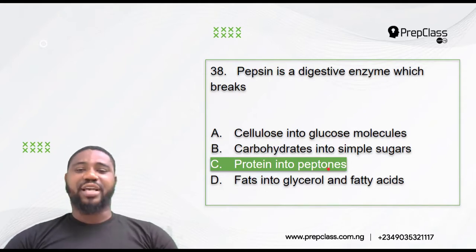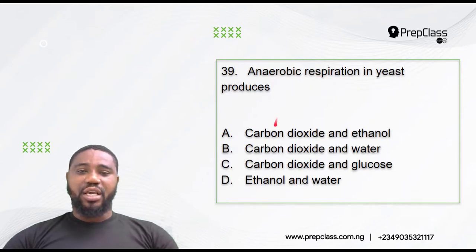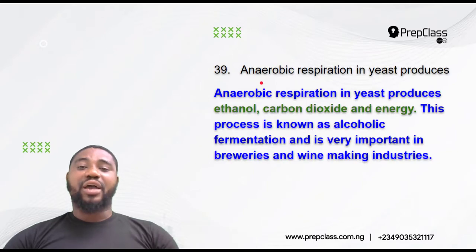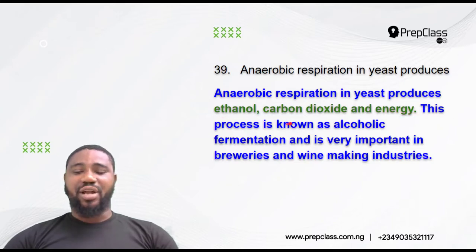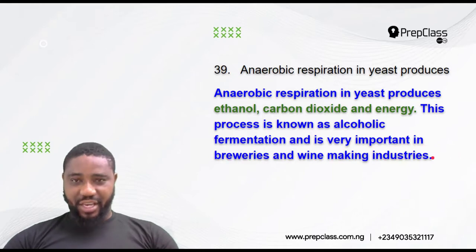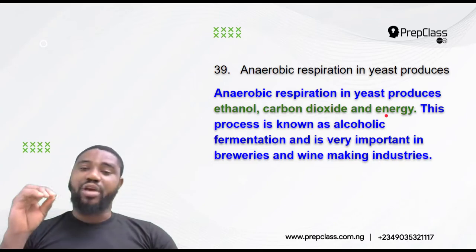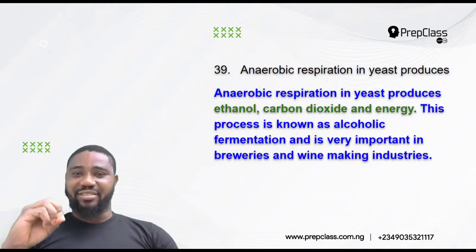Question 39: Anaerobic respiration in yeast produces — carbon dioxide and ethanol, carbon dioxide and water, carbon dioxide and glucose, or ethanol and water? Anaerobic respiration in yeast produces ethanol, carbon dioxide, and energy. This process is known as alcoholic fermentation and it is very important in the breweries and winemaking industries. They make use of an enzyme called zymase in this process.